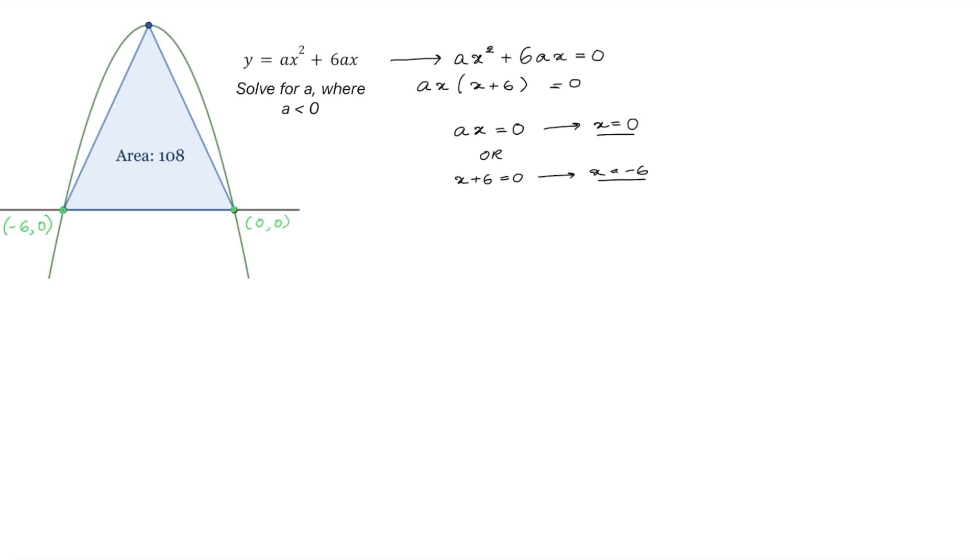Now how do we find the vertex? Well, let's try finding the x coordinate first. We know that the vertex of a parabola lies on the axis of symmetry of the parabola. And the equation for the axis of symmetry will be the average of the x coordinates of the roots. So let's solve for that equation.